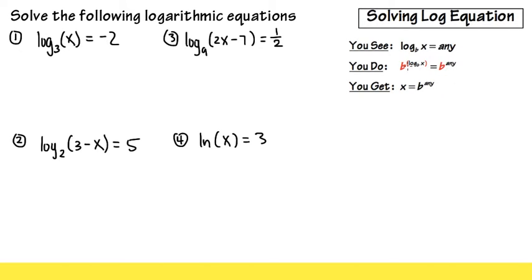And then what you'll get is, this b to that power — the b and log b will cancel each other out, and you will just have x by itself. Then we have to work out b to whatever power that is on the right-hand side. After we do that, we should be able to get rid of the logarithms from the equation, and this should be easy and automatic from there.